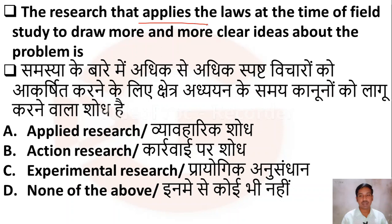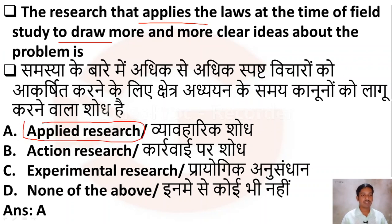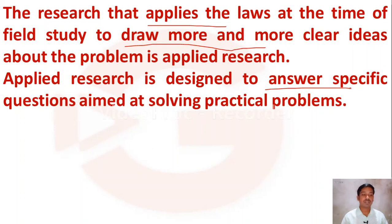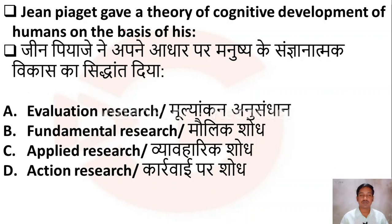The next question: the researcher that applies laws at the time of field study to draw more and more clear ideas about the problem is which type of research? Option A: applied research, Option B: action research, Option C: experimental research, Option D: none of the above. The right answer is Option A — applied research. Applied research applies the laws and principles at the time of field study and is designed to answer specific questions aimed at solving problems.